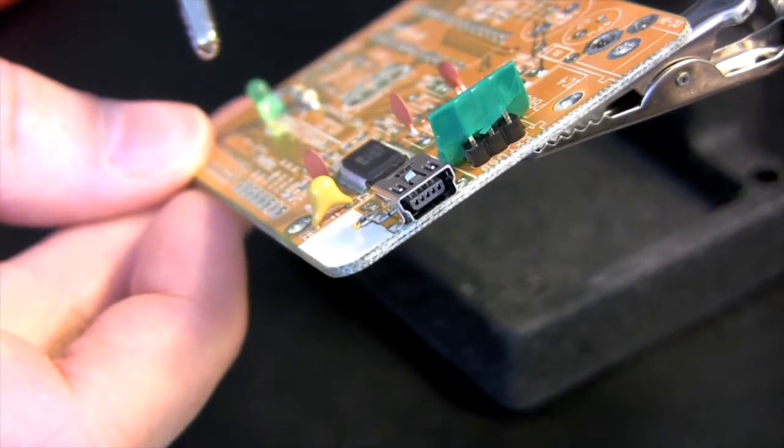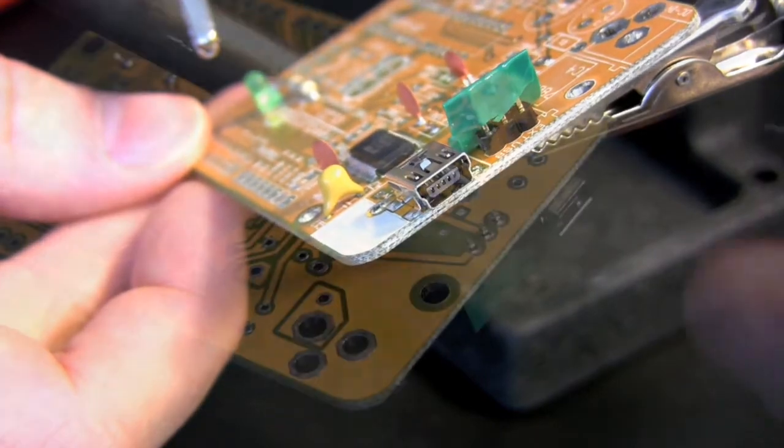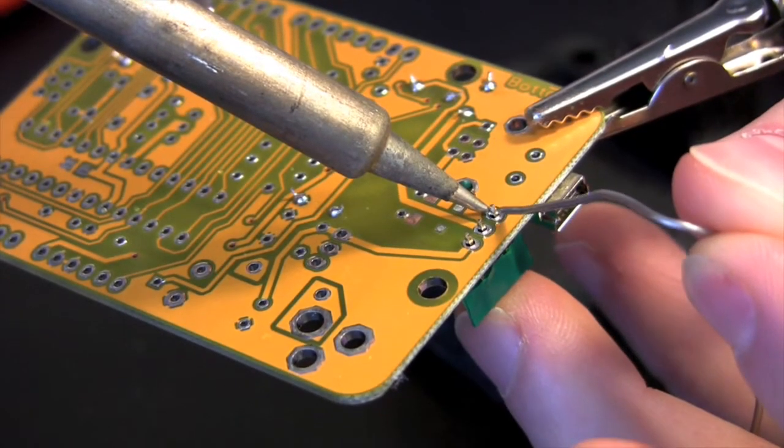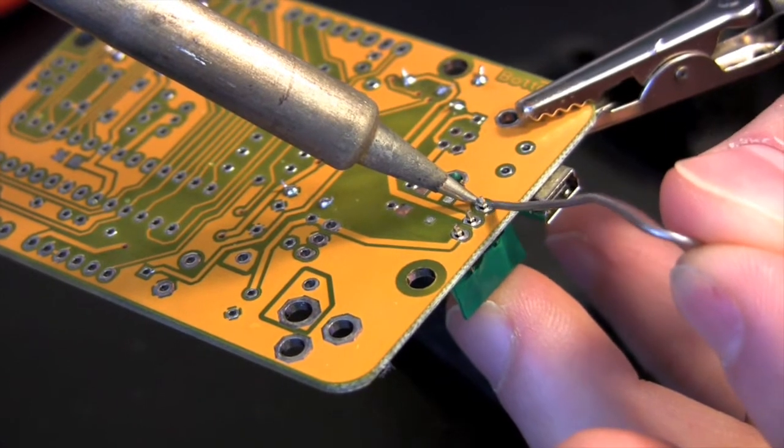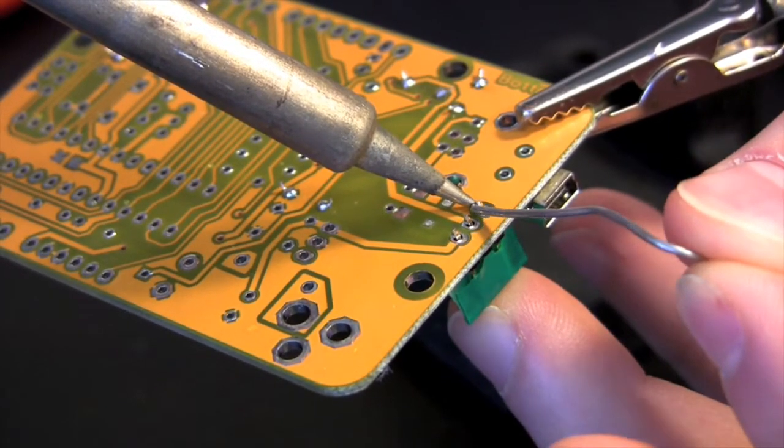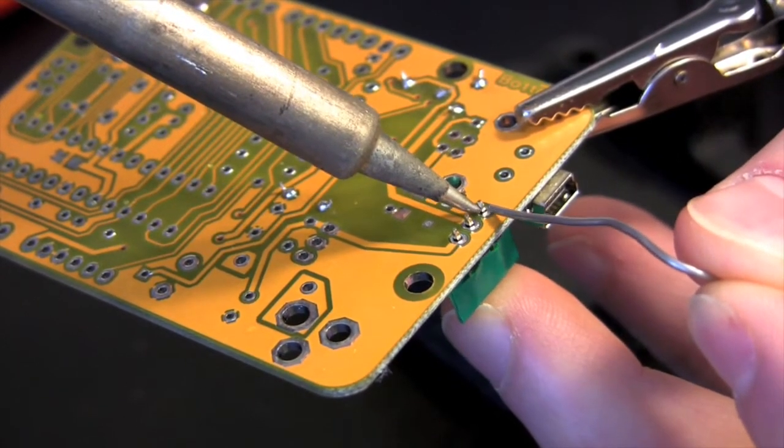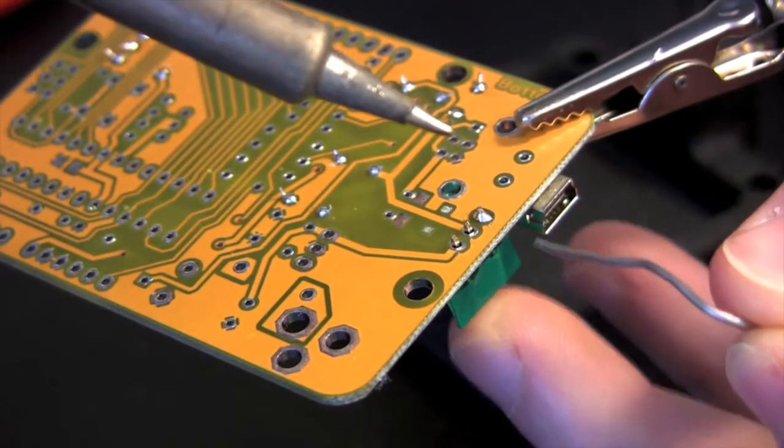Next we're going to add the 3-pin male header. I don't know what experts do, but I found I needed to use a small bit of electrical tape to keep the component in place while I was trying to solder it. If you have a friend that you're working with, they can help you hold the component in place while you're doing the work.